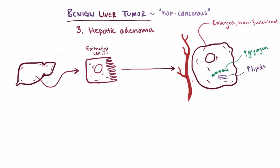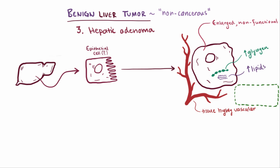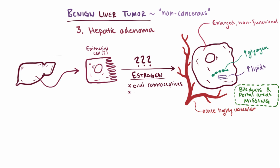The tissue around them is usually highly vascularized, and both bile ducts and portal areas are absent. Just like focal nodular hyperplasias, we don't really know why they form. But one important distinction is that these are highly associated with the use of estrogen-based drugs, especially oral contraceptives, but also other anabolic steroids.